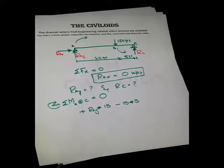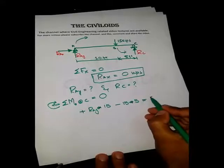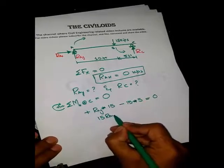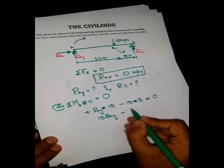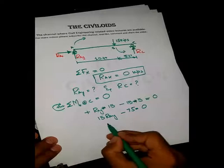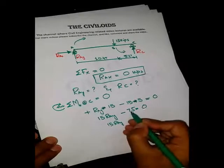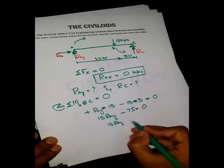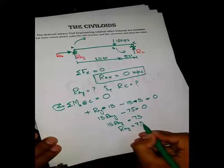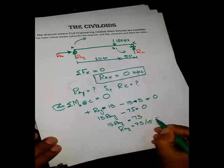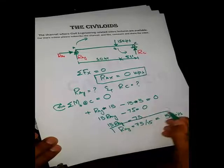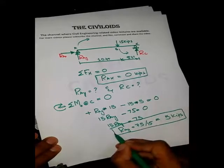There are no other forces producing moment about C, so we equate to zero: RaY × 15 − 15 × 5 = 0, which gives 15·RaY − 75 = 0. Shifting 75 to the other side: RaY = 75 ÷ 15 = 5 kips. We have determined the unknown vertical reaction at A: RaY = 5 kips.